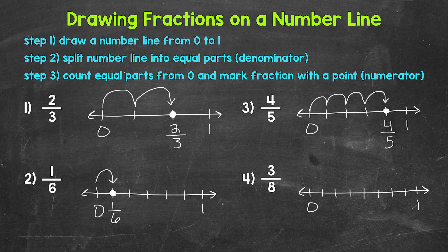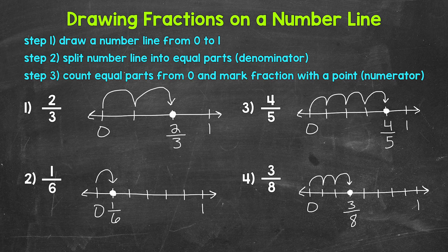Now we need to count and go over three equal parts — that's our numerator: one, two, three. So we went one eighth, two eighths, three eighths. We can mark and label our fraction: three eighths. The distance between zero and one was divided into eight equal parts, and we went over three out of those eight equal parts to represent three eighths.